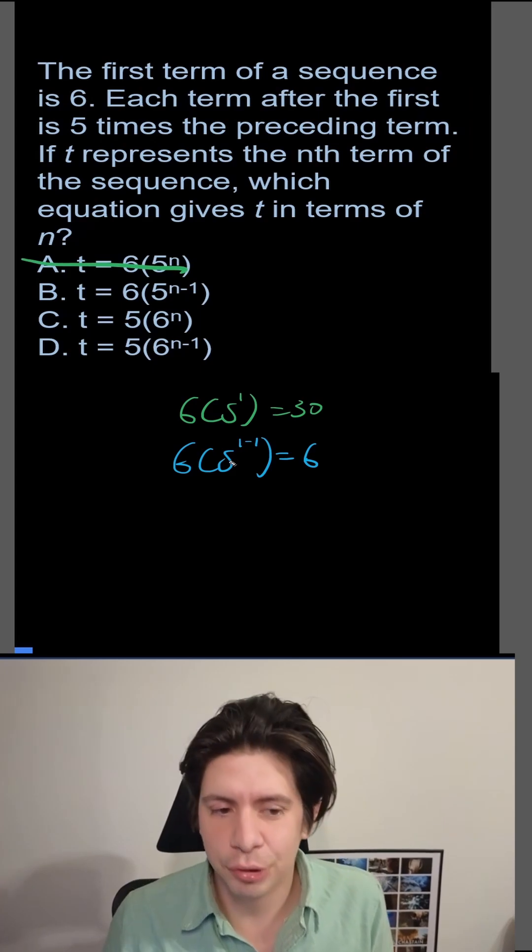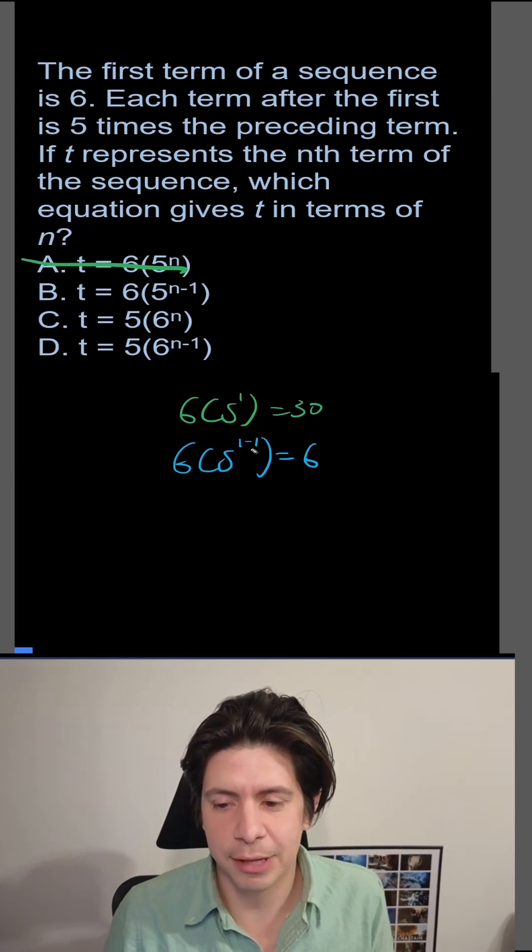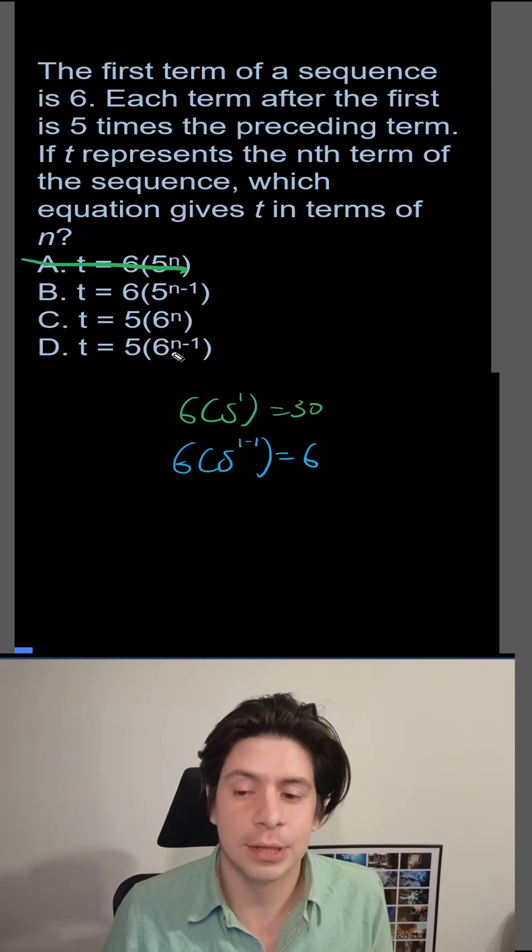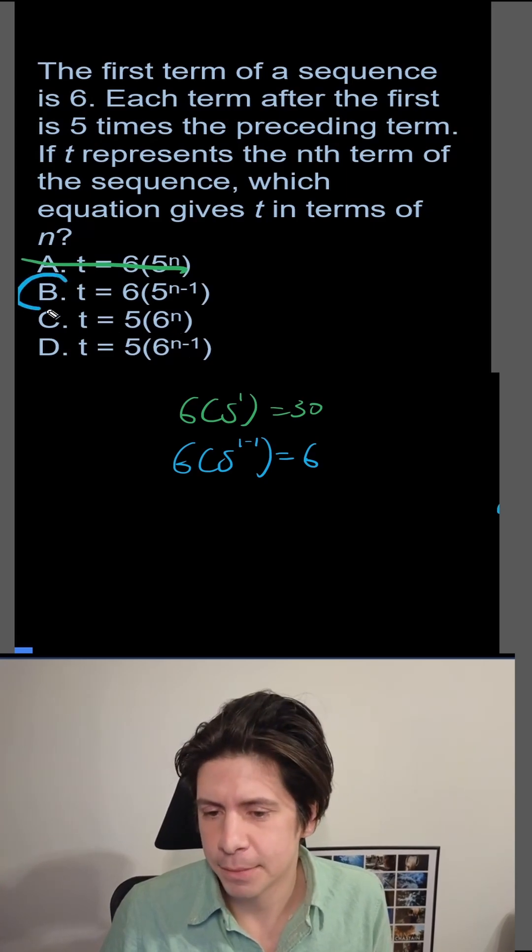And every time you go up 1 in the exponent, you're going to multiply by another 5. So it should be B. C would get us 30 again, and D would get us 5 as the first term. So it's B.